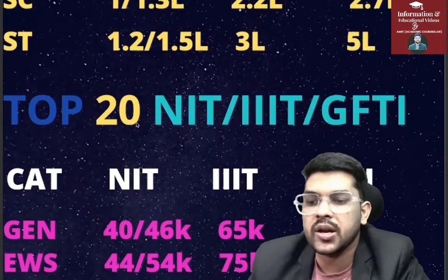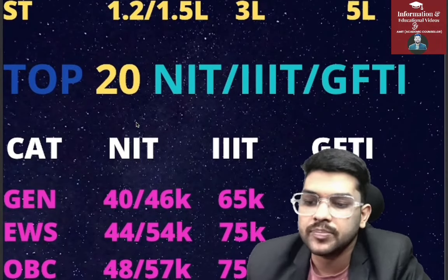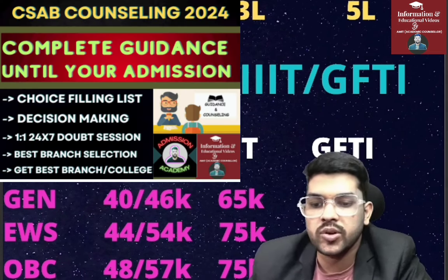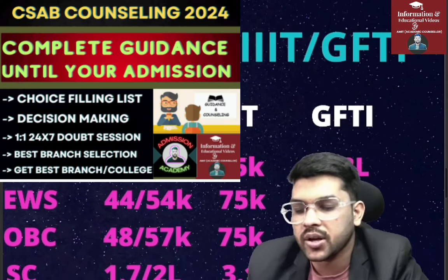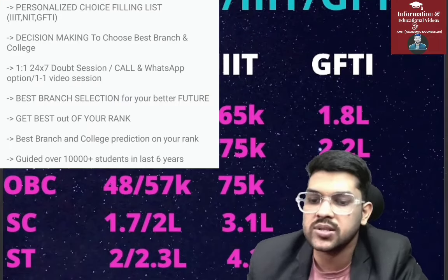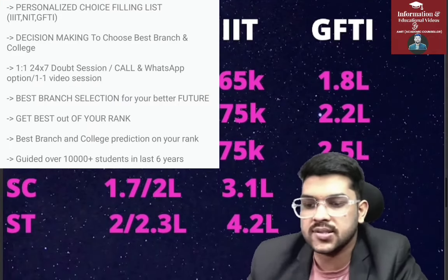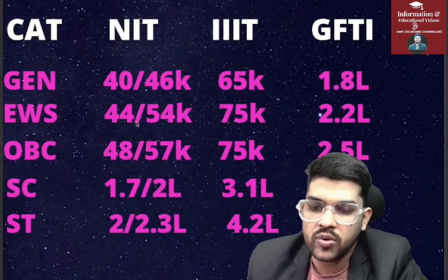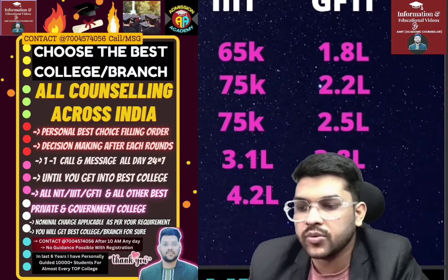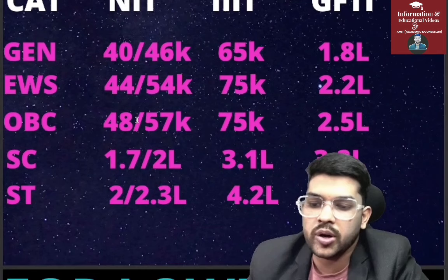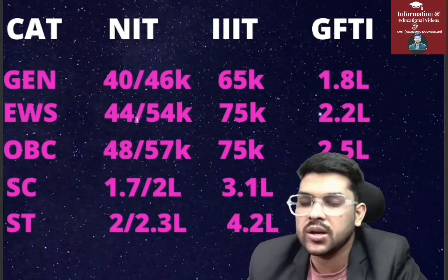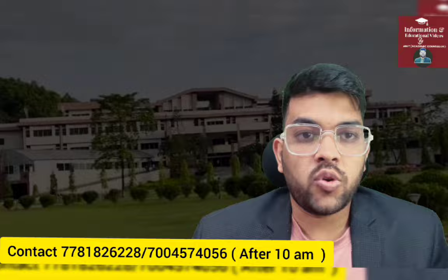For top 20 NIT, IIIT, and GFTI, here is the cut-off information: General category — 40 for male, 46 for female; IIIT — 65; GFTI — 1.8 lakh. EWS — 44, 75, 2.2 lakh. OBC — 48, 75, 2.5 lakh. SC — 1.7, 3.1, 3.8 lakh for NIT, IIIT, and GFTI respectively. ST category — 2, 2.3, 4.2, and 5 lakh for NIT male, NIT female, IIIT male, and GFTI male.